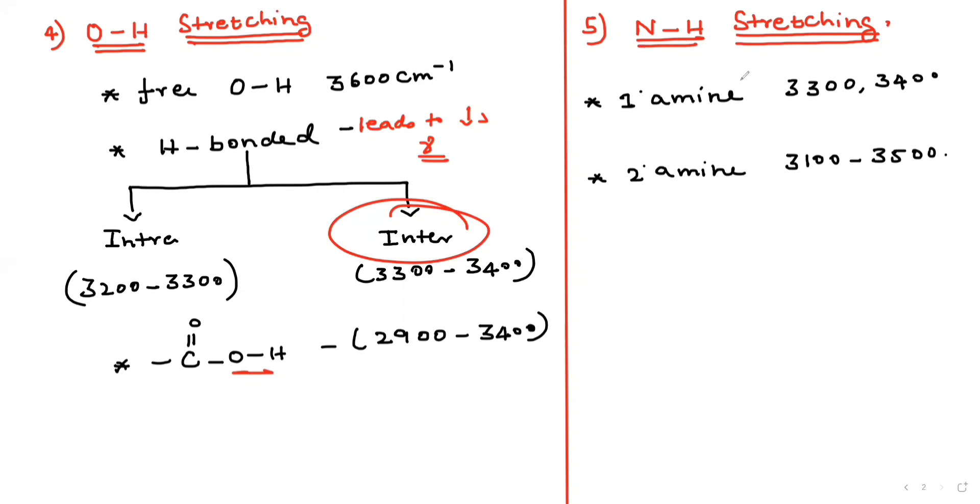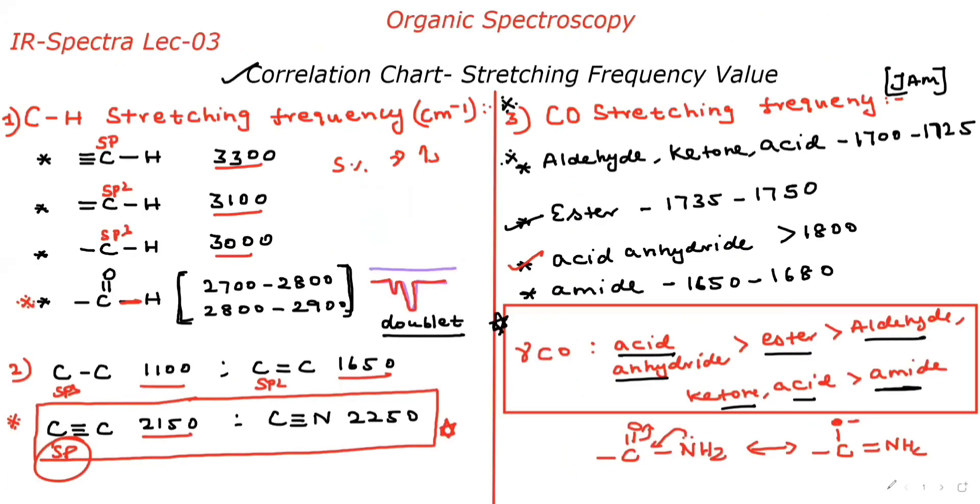Finally, N-H stretching frequency. In primary amines, we discussed in the previous class that whenever an atom is attached with two identical atoms, they show always two peaks - one symmetrical peak and one asymmetrical peak. Therefore, this is the symmetrical peak and this is the asymmetrical peak. They always show two peaks. In secondary amines, the value should be 3100 to 3500. These five important values are very important for our JAM exam point of view.